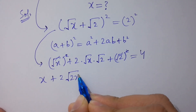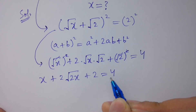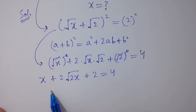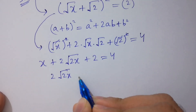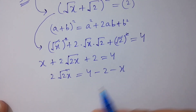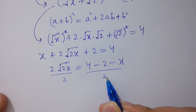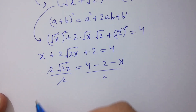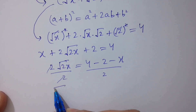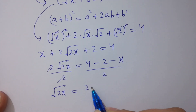So we get: x plus 2 times square root of 2x plus 2 equals 4. Then 2 square root of 2x equals 4 minus 2 minus x, and dividing both sides by 2 — the 2s cancel — giving square root of 2x equals (2 minus x) over 2.